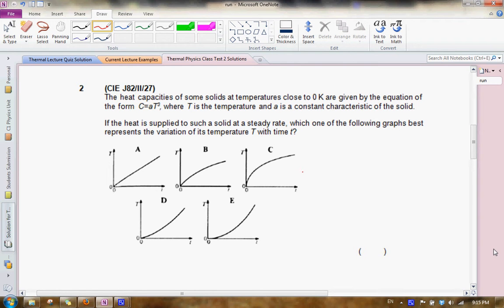Question 2 of our thermal class test. This is a CIE paper question. You are told that the heat capacities of some solids at temperatures close to 0 Kelvin are given by this equation, which is of the form C equals AT to the power 3, where T is the temperature and A is a constant that's characteristic of the solid. You are also told that if heat is supplied at a steady rate, which one of the following graphs best represents the variation of temperature T with time t? Now we do not have an exact relationship so far between T temperature and time.